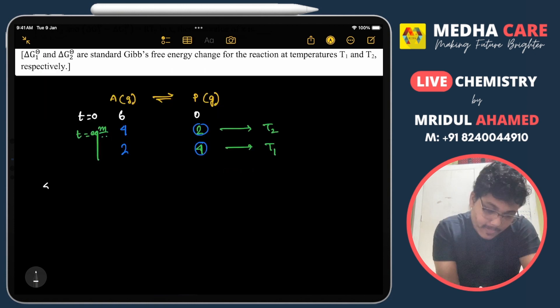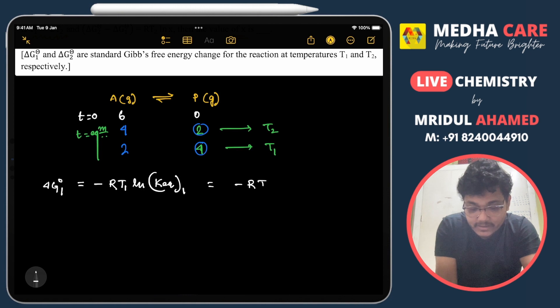Let us take ΔG°₁, that will be -RT1 ln K1 at T1 temperature. That is -RT1 ln(4/2), which equals -RT1 ln 2.